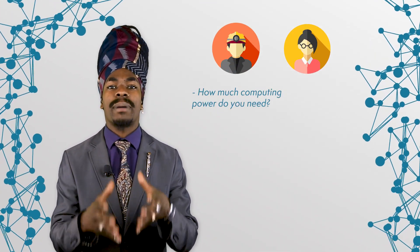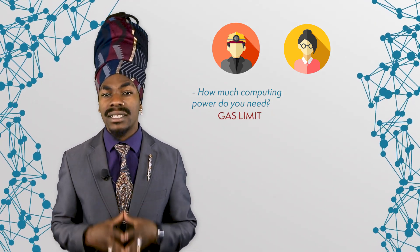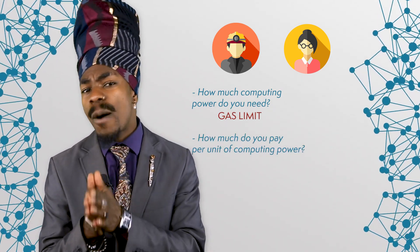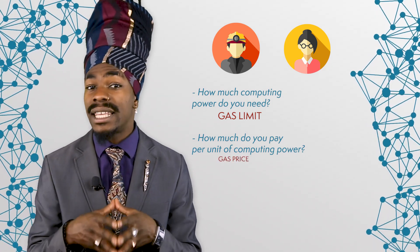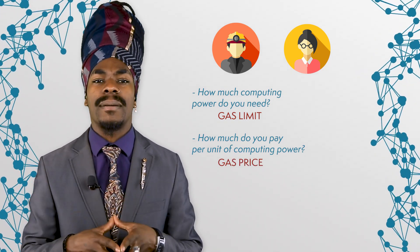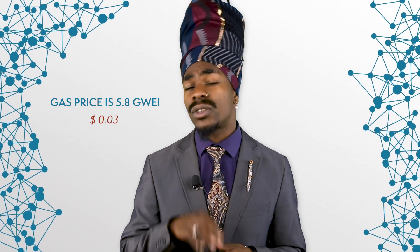The questions that the miners are asking the sender are basically this: How much computing power do you need? This is indicated by the gas limit. And how much do you pay per unit of computing power? This is indicated by the gas price. For a normal Ether transaction, the default gas is limited to 21,000. At a gas price of 5.8 GWEI, this currently translates to 3 cents.